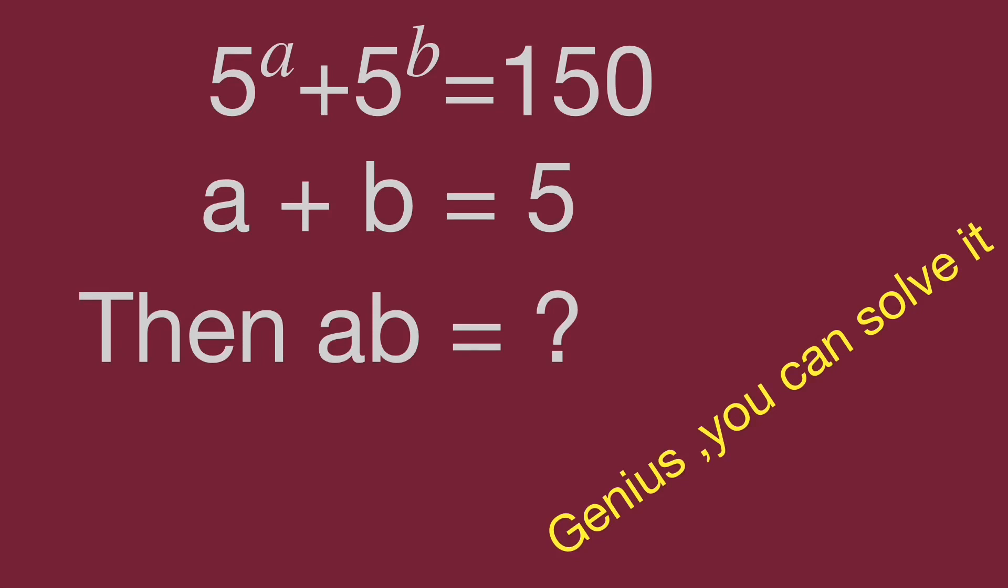The question is 5 power of a plus 5 power of b equal to 150, a plus b equal to 5, then find the value of a multiplied by b.